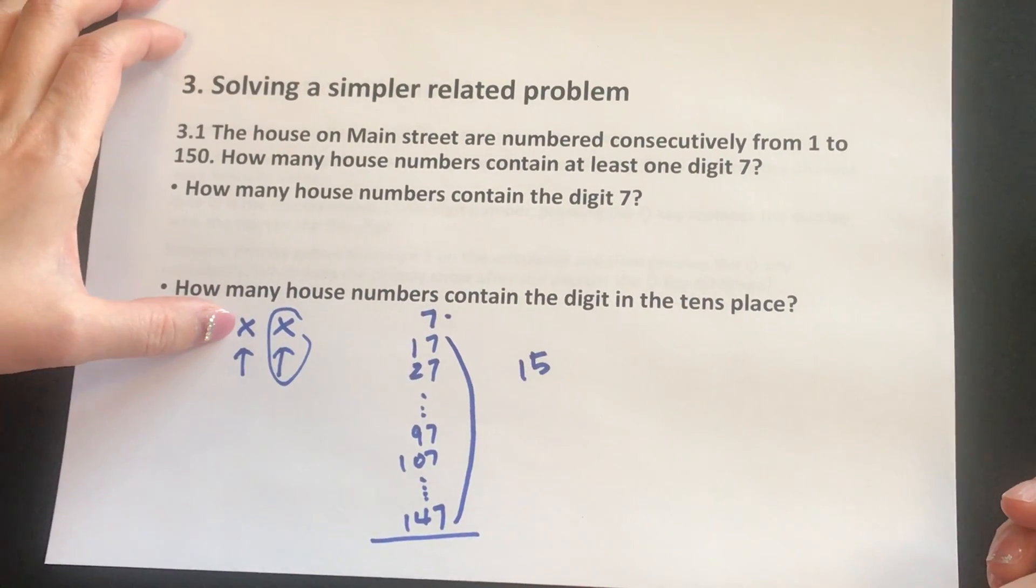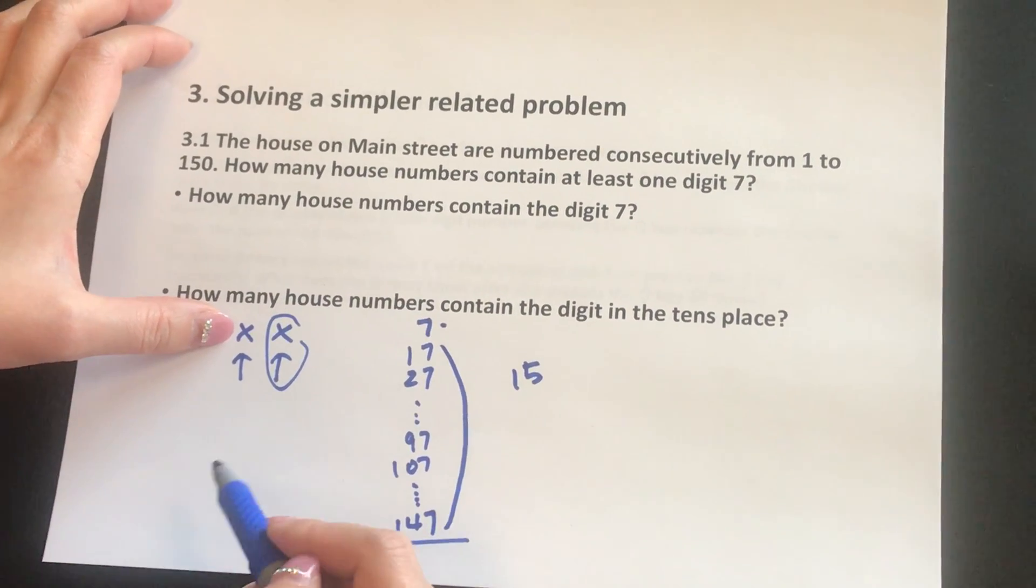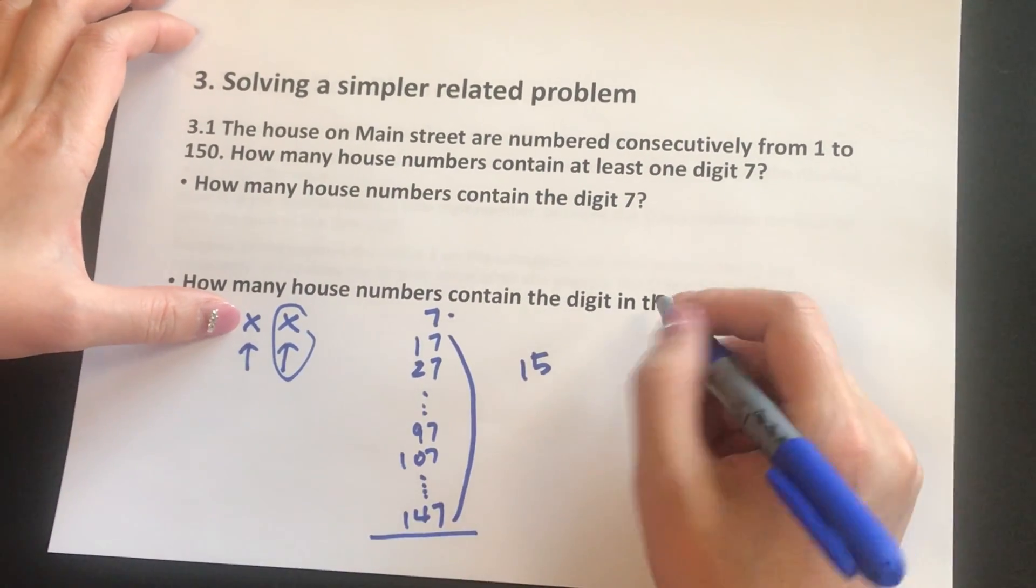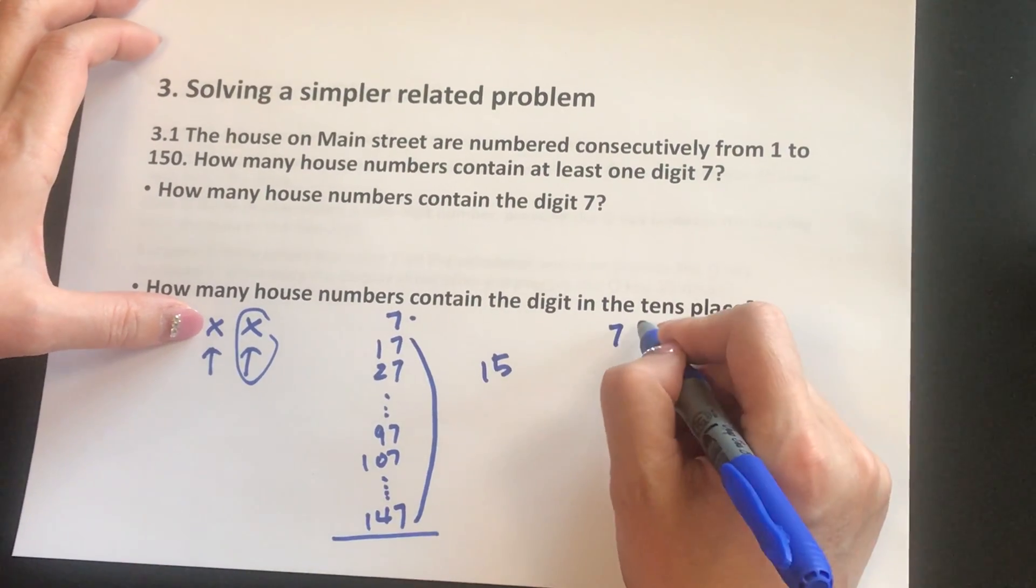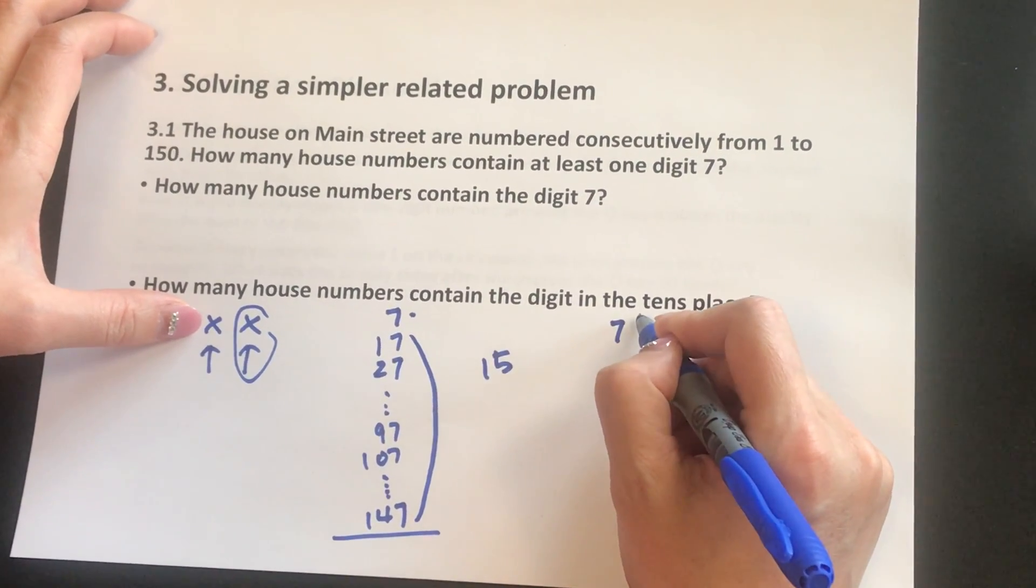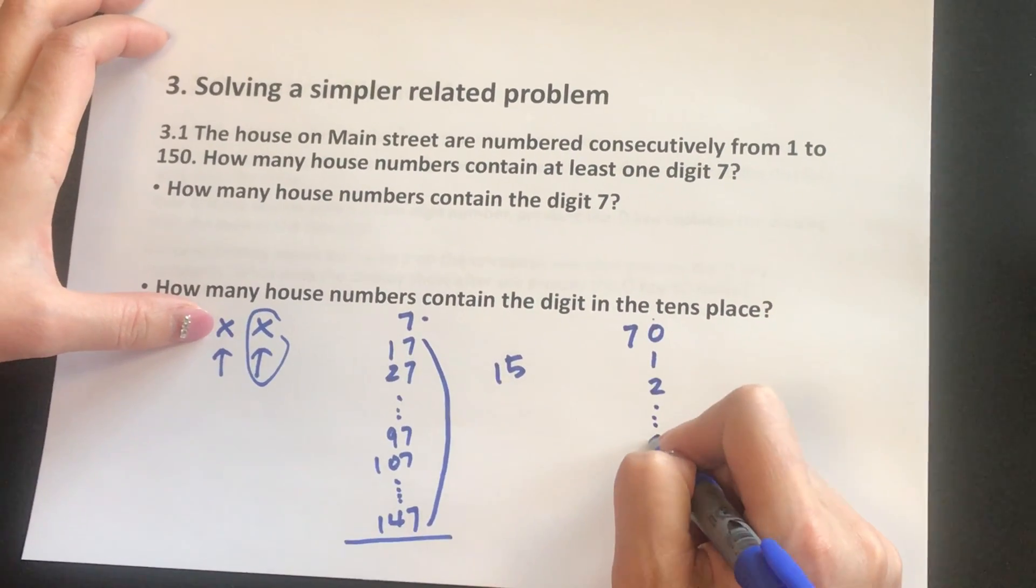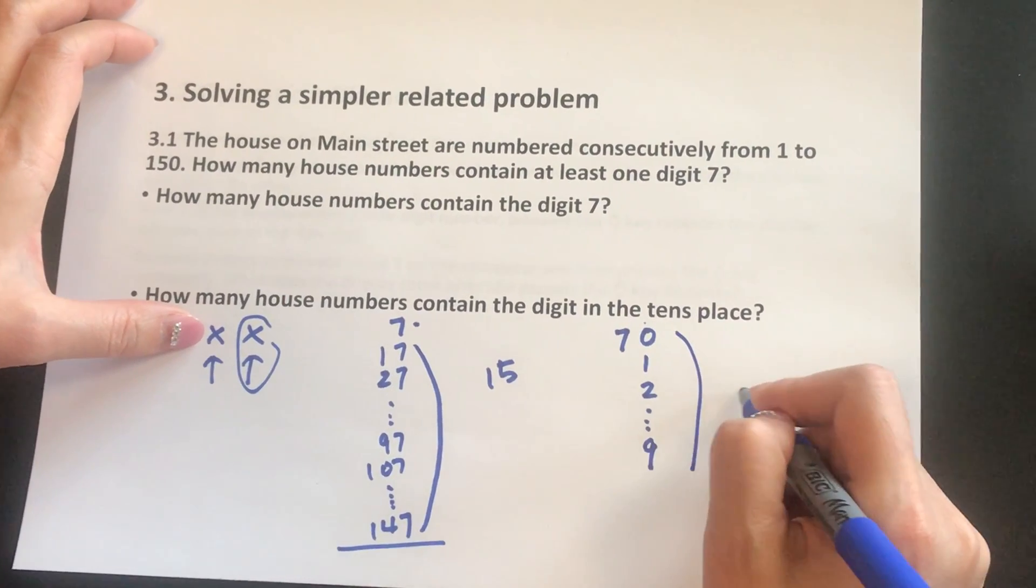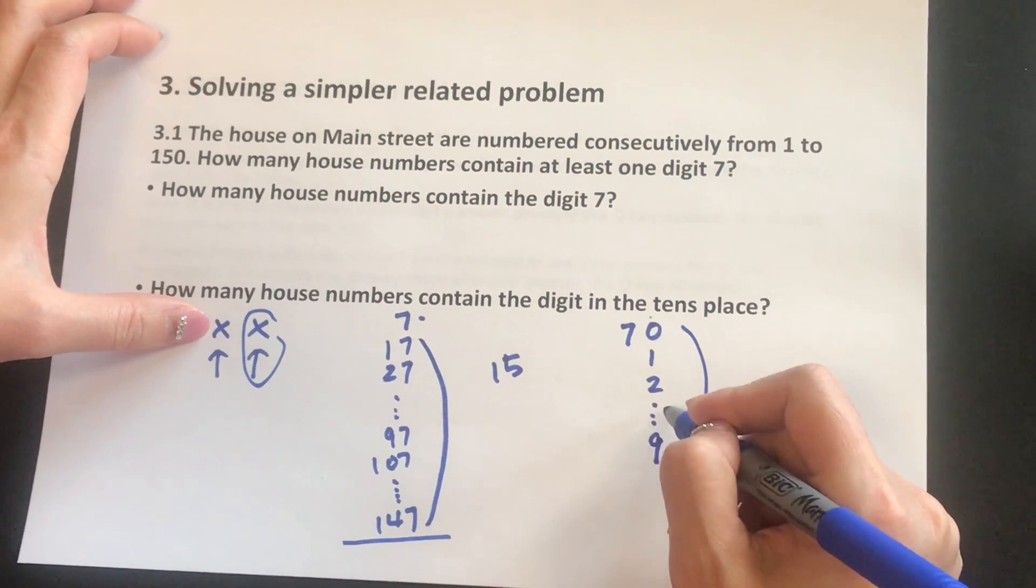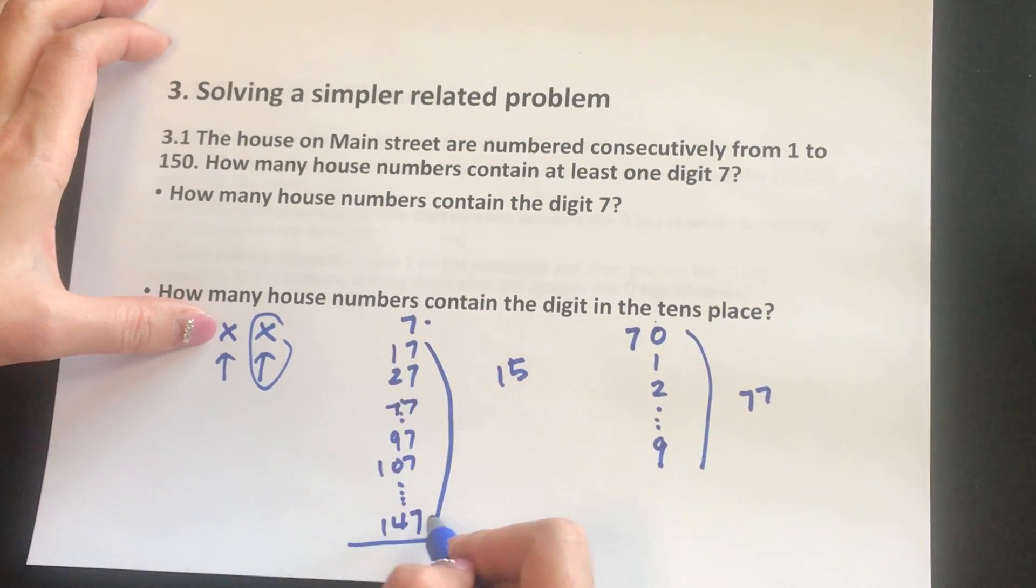And now we can look at how many numbers are there when the tens place is a 7. So we have 7 happens in the tens place, and the singles place can be 0, 1, 2, all the way to 9. And then in this case, we have a 77 in here, but 77 is already being accounted in the 15.